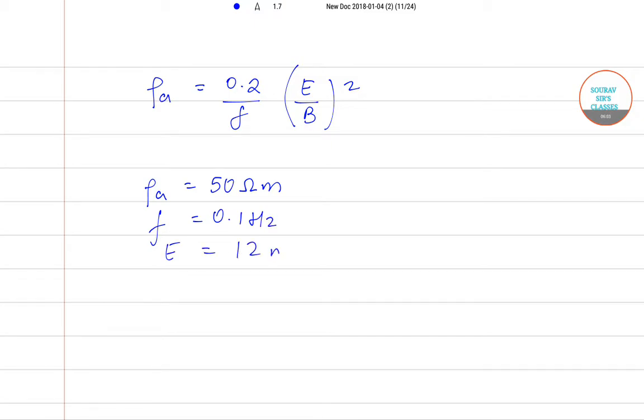So we will find the value of B. Therefore B becomes under root 0.2 into E square by F into rho A. Let us substitute the values one by one. We have under root 0.2 into 12 into 12 by 0.1 into 50 nT.